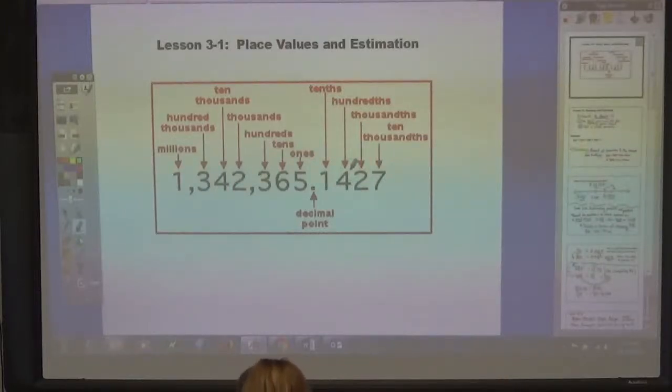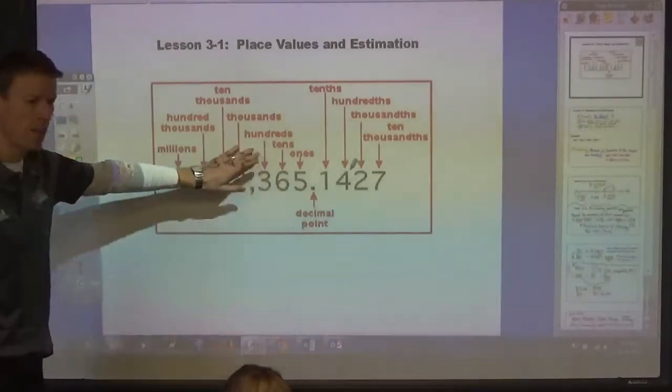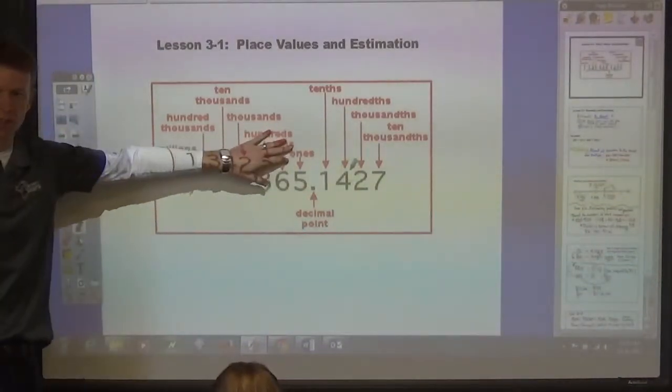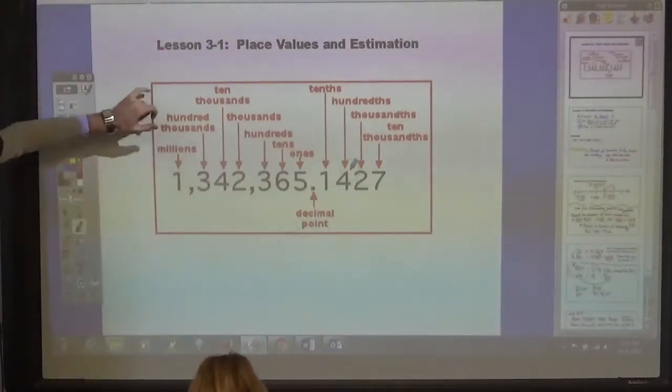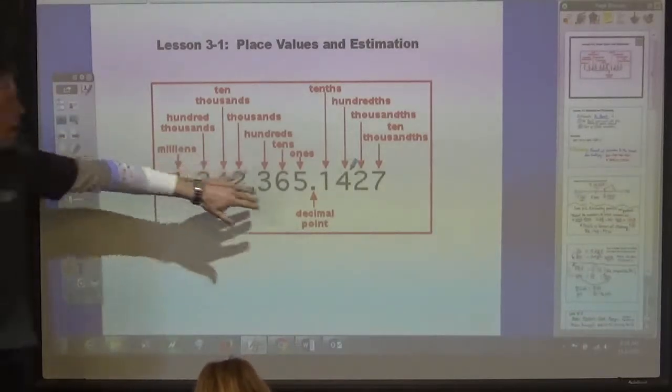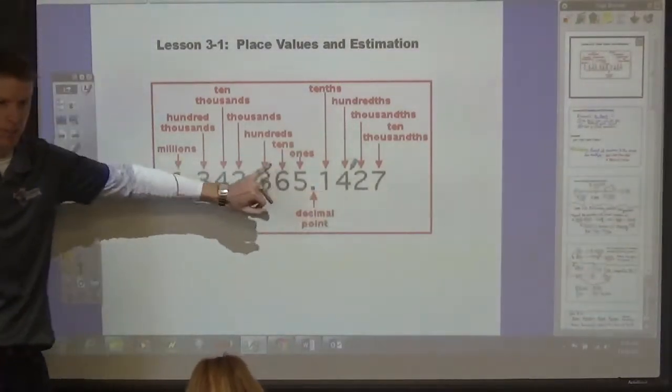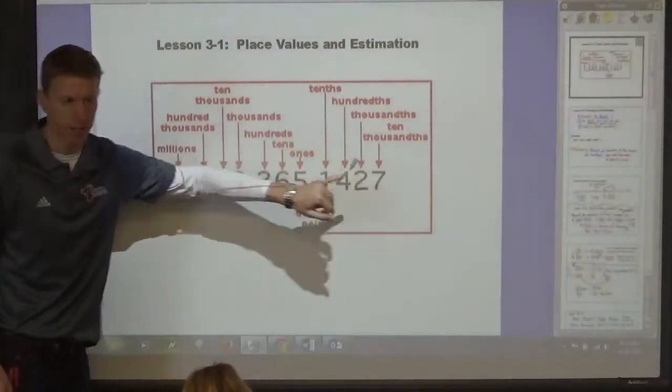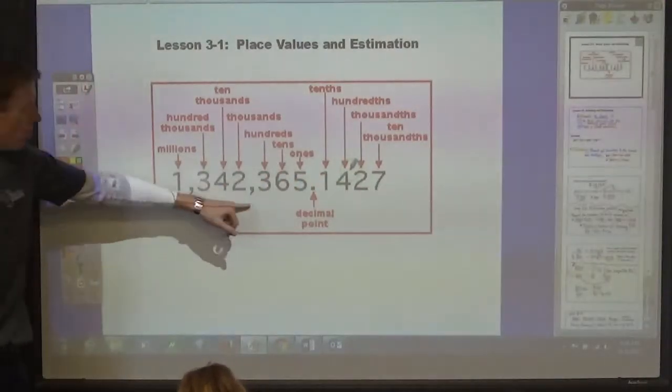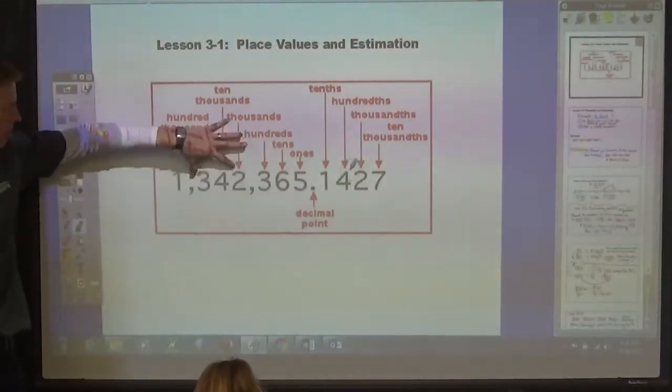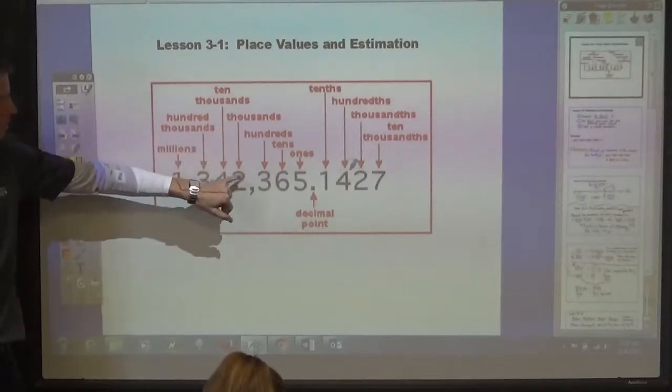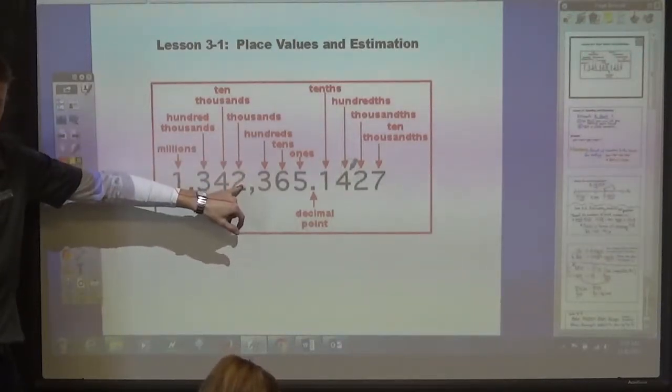Okay, so this first lesson is about place values and then rounding and estimating. First of all, when you are reading this number, just like before, you read each group and then say the value of the last digit in the group.